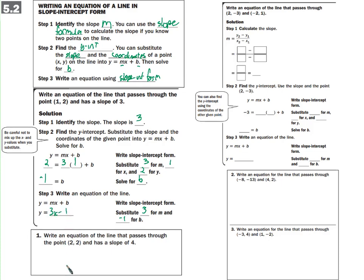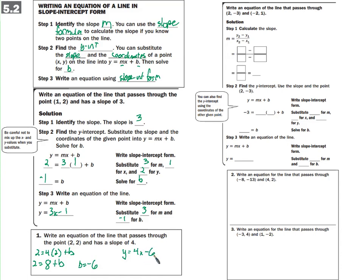Write an equation of the line that passes through (2, 2) with a slope of 4 — exactly the same thing. We have 2 = 4(2) + b, so 2 = 8 + b. Subtract 8 from both sides: b = -6. So y = 4x - 6.